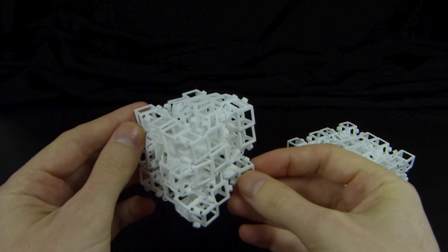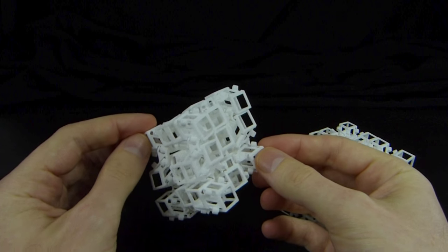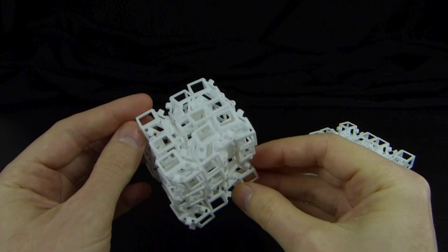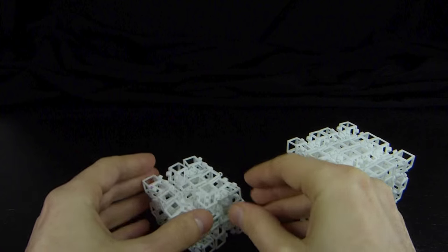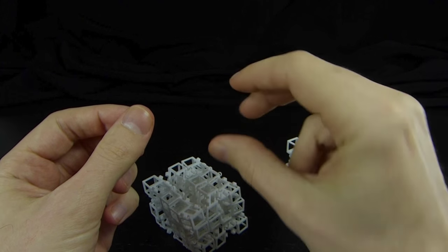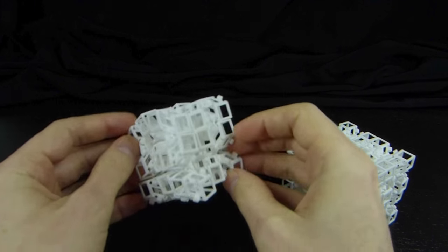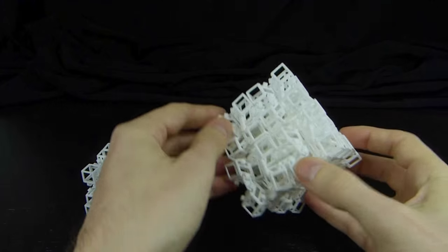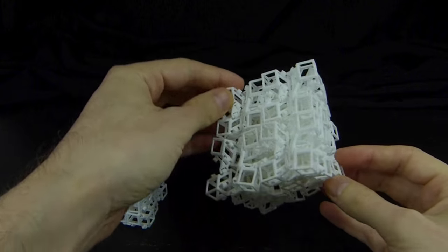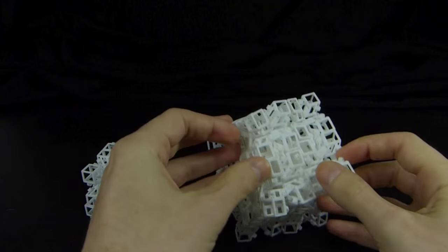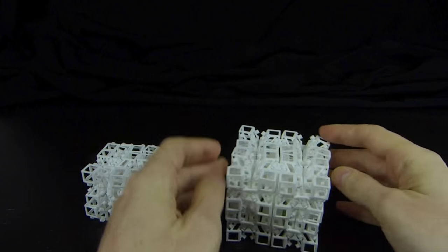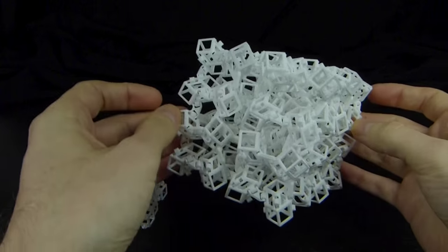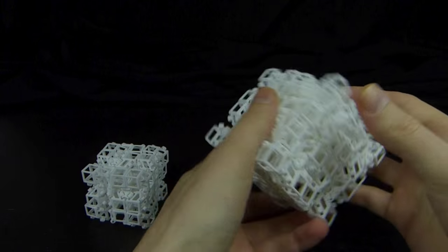What is the jitterbox mechanism? This is an example of an auxetic material. Most materials, if you pull on two ends of it, it gets thinner in the middle. An auxetic material, if you pull on the ends, it gets bigger in the perpendicular direction. So if you pull any part of this apart in any direction, it gets bigger in all three directions.